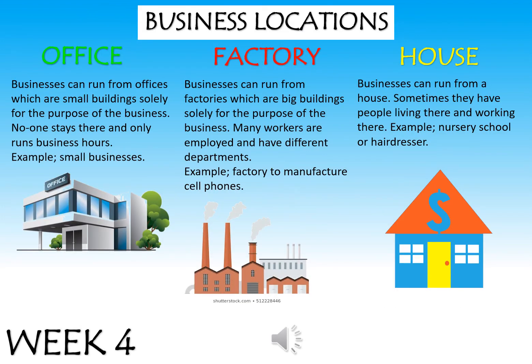Let's talk about business locations. There are three main types: an office, a factory, and a house — basically where your business can run from. An office, shown on the left in green, is a small building solely for the purpose of the business. No one lives there and it only runs during business hours. An example is your school office, where Principal Tanya and Teacher Esme sit — that is the school office.